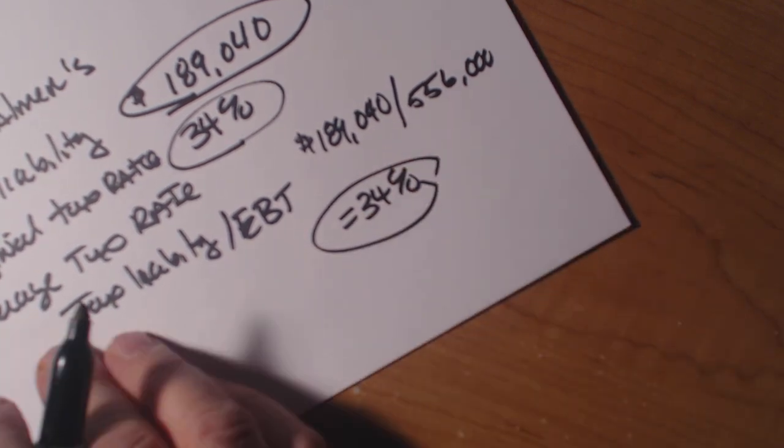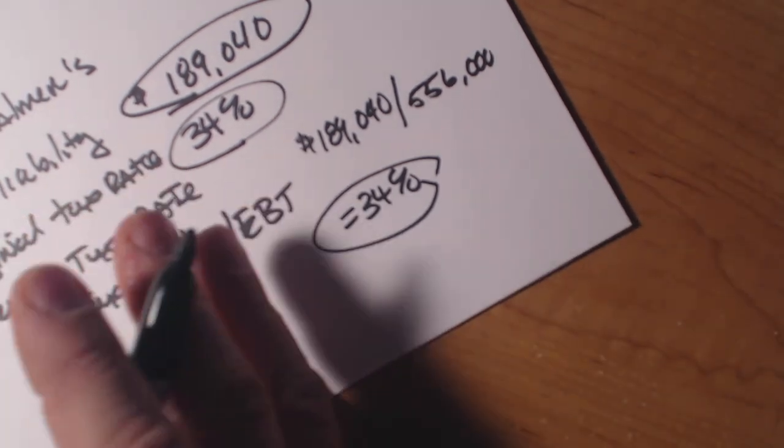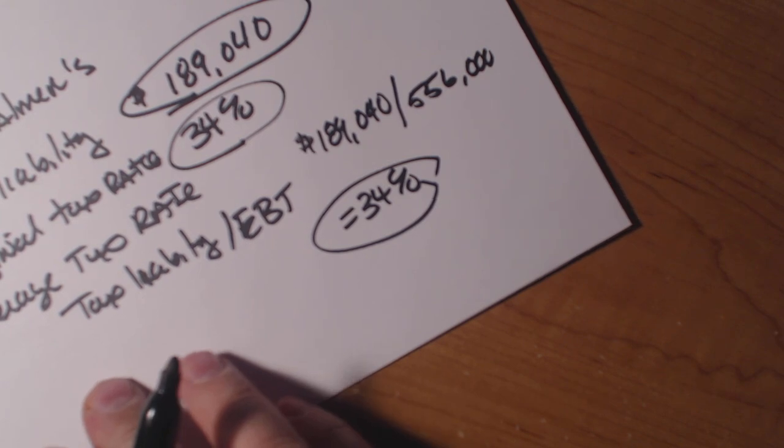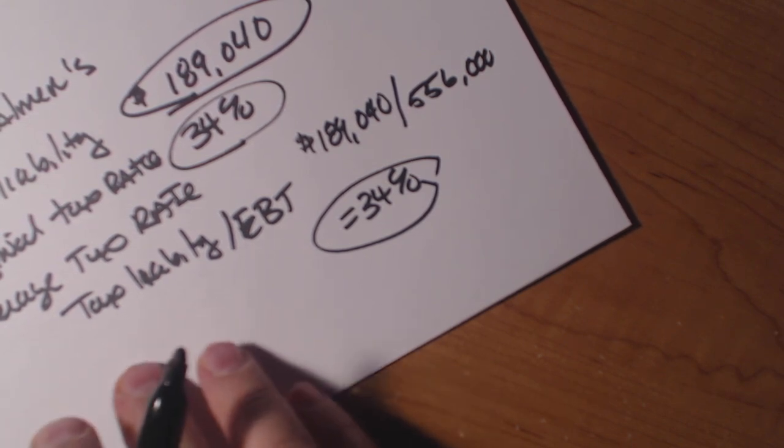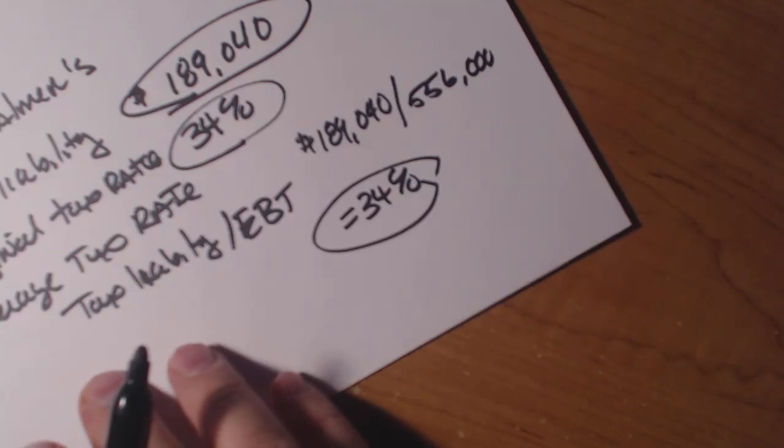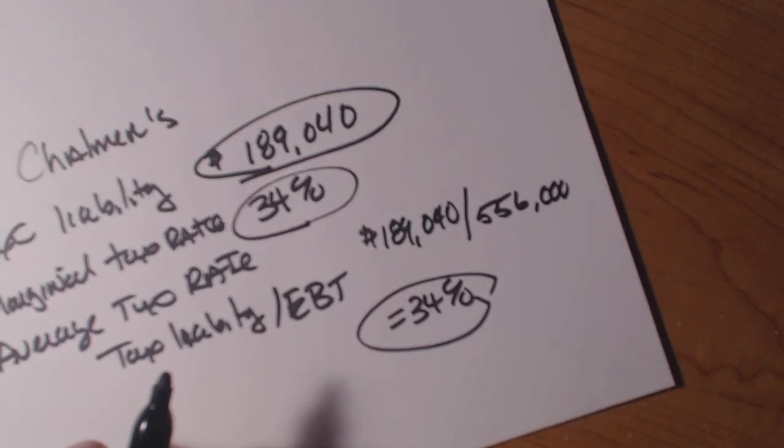Now the marginal tax rate is important in financial decisions because it's involving incremental income because such income is generally taxed at this rate. So that means that the next dollar that you make will be taxed at the 34% rate. So that's important for us to know in business.